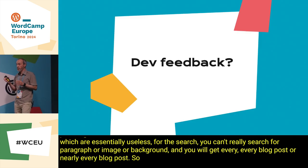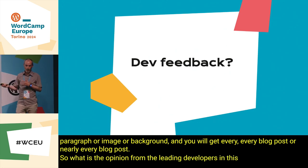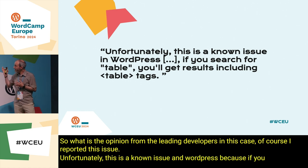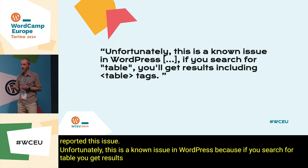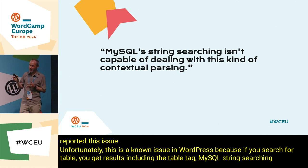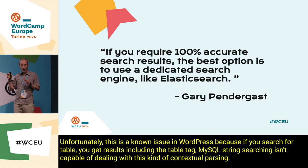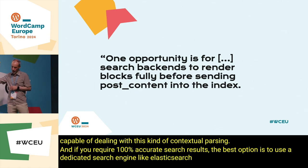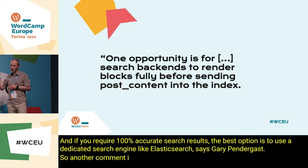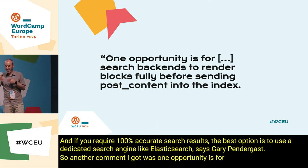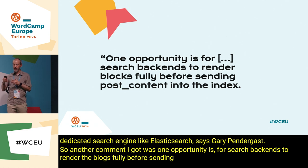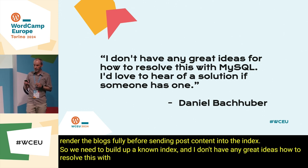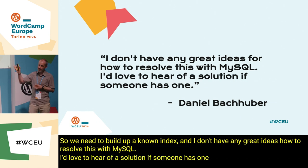I reported this issue. Unfortunately, this is a known issue in WordPress, because if you search for 'table' you'll get results including the HTML table tag. MySQL string searching isn't capable of dealing with this kind of contextual parsing. And if you require 100% accurate search results, the best option is to use a dedicated search engine like Elasticsearch, says Gary Pendergast. Another comment I got was: one opportunity is for search backends to render the blocks fully before sending post content into the index, so we need to build up a known index. And I don't have any great ideas how to resolve this with MySQL — I'd love to hear a solution if someone has one, says Daniel Bachuber.